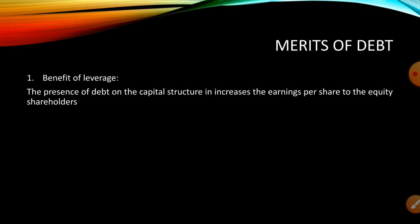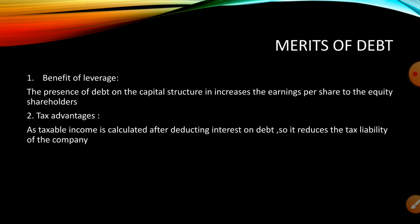When a company has only equity in its capital structure, profits are distributed among all equity shareholders, so each shareholder receives less. But when a company has debt, the number of equity shareholders is fewer, resulting in better EPS for each. The second merit is tax advantages: taxable income is calculated after deducting interest on debt, so it reduces the tax liability of companies that have debt in their capital structure.